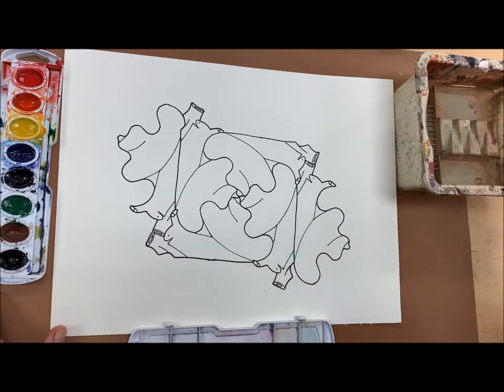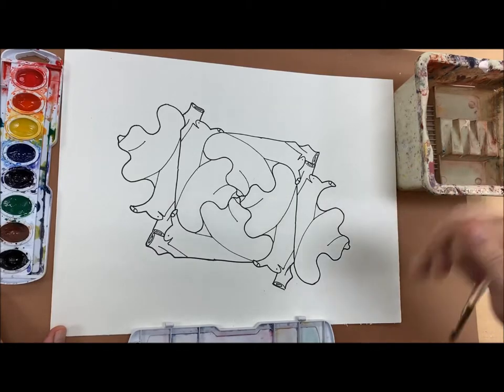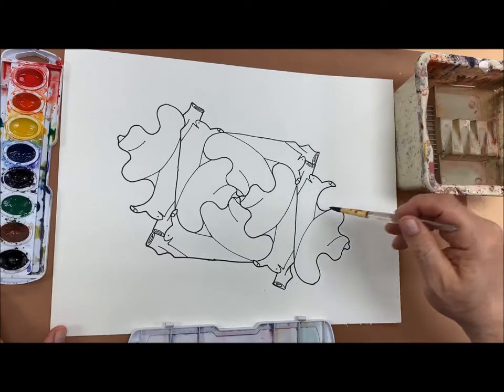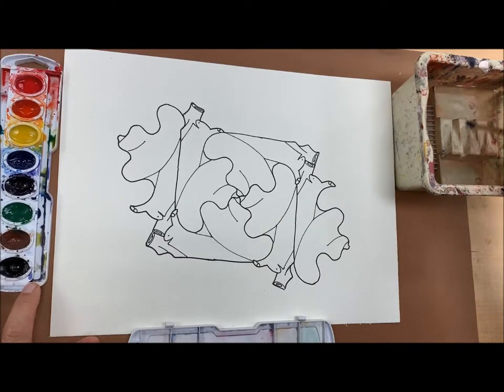When you start with watercolors it's important to have a round brush that goes to a point. A round brush that comes to a point can help you get little areas as well as large areas when you use the side of the brush.